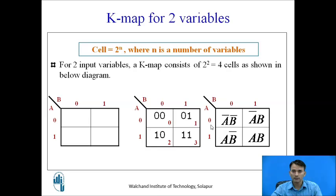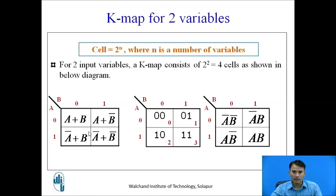The next K-map shows min terms for each cell: A̅B̅, A̅B, AB̅, and AB. For max terms, you can see: A+B, A+B̅, Ā+B, and Ā+B̅. This is how min terms and max terms can be represented using a 2-variable K-map.